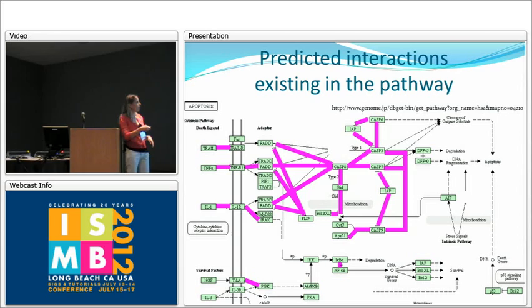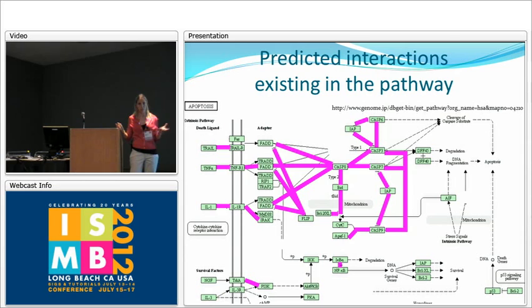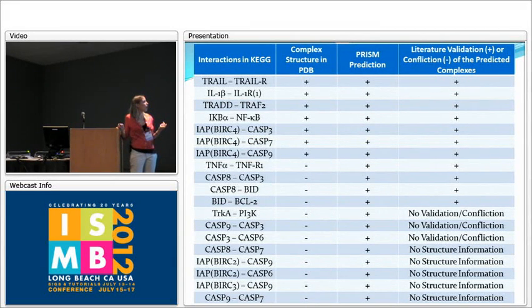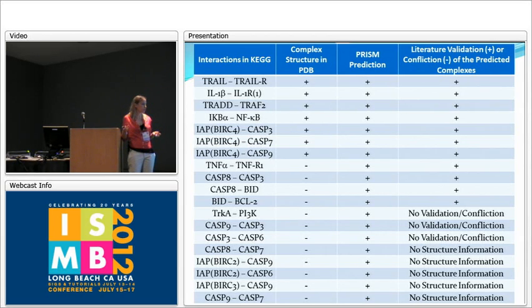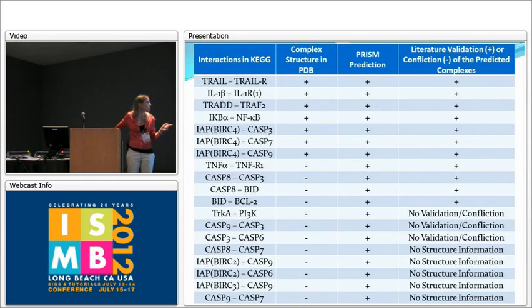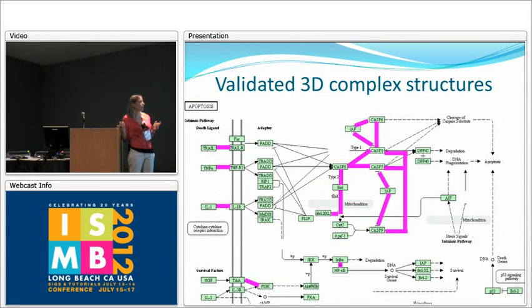Here we have the KEGG pathway — this is the human apoptosis pathway. The pink lines shown here are the PRISM predictions we found. When we check the complex structures of these protein-protein interactions against the literature, 19 of them could be validated in some way. For some structures there was either no validation or no confliction, and in some cases we could not find structure information in the literature. These are the predicted complex structures.